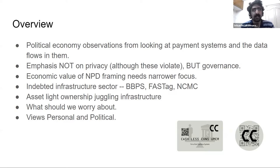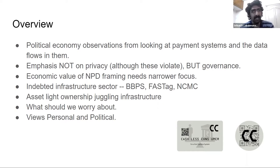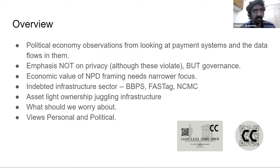What's common is that all three payment systems are part of the indebted infrastructure sector. You may have heard about the non-performing assets of banks — loans that are not being repaid — primarily in the infrastructure sector. This covers electricity (where BBPS comes in), highways and tollways (FASTag), and metro rail urban transit infrastructure (National Common Mobility Card). We'll see how all three have had huge debt issues and what NPD around them tries to achieve.